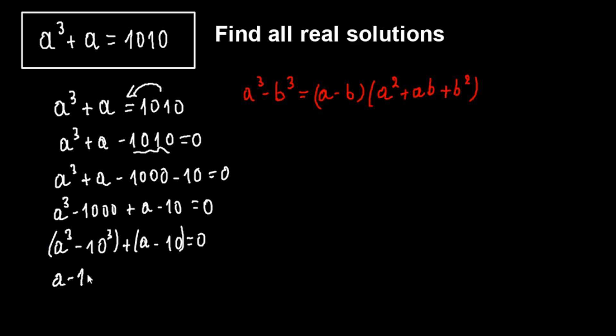We apply this here, so we have a minus 10 times a to the second plus a times 10, which is a to the second plus 10a plus 100, plus a minus 10 equals 0.